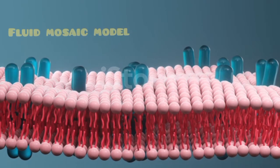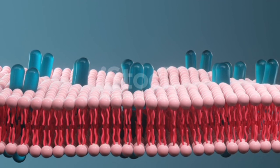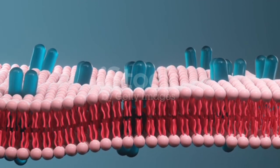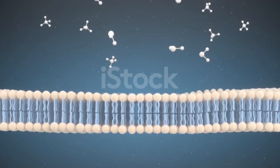Fluid mosaic model: The arrangement of molecules in the plasma membrane is described by the fluid mosaic model, depicting a dynamic structure where proteins and lipids are not fixed, but rather move and interact within the membrane.